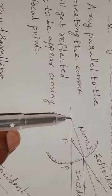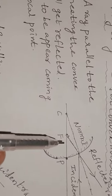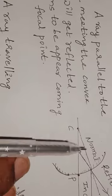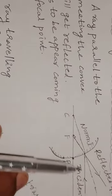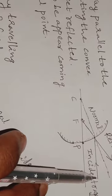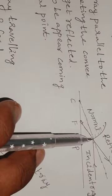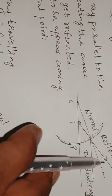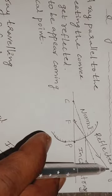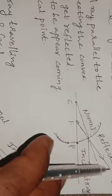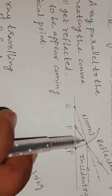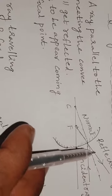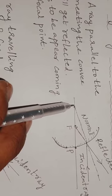In the case of a convex mirror, the focal point and center of curvature lie inside the mirror, because the image is always formed inside the mirror. For Rule 1, the incident ray coming from the object moves parallel to the principal axis, strikes the convex surface, and gets reflected. The reflected ray moves in a direction that seems to appear coming from the focal point. We draw a normal between these two rays, and this normal coincides with the center of curvature.